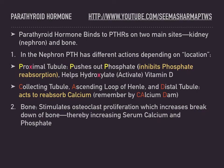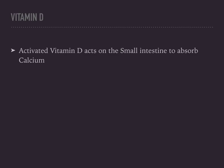PTH acts on the bone by stimulating osteoclast proliferation, which increases breakdown of bone, thereby increasing serum calcium and phosphate. Also remember that activated vitamin D absorbs calcium from the small intestine.